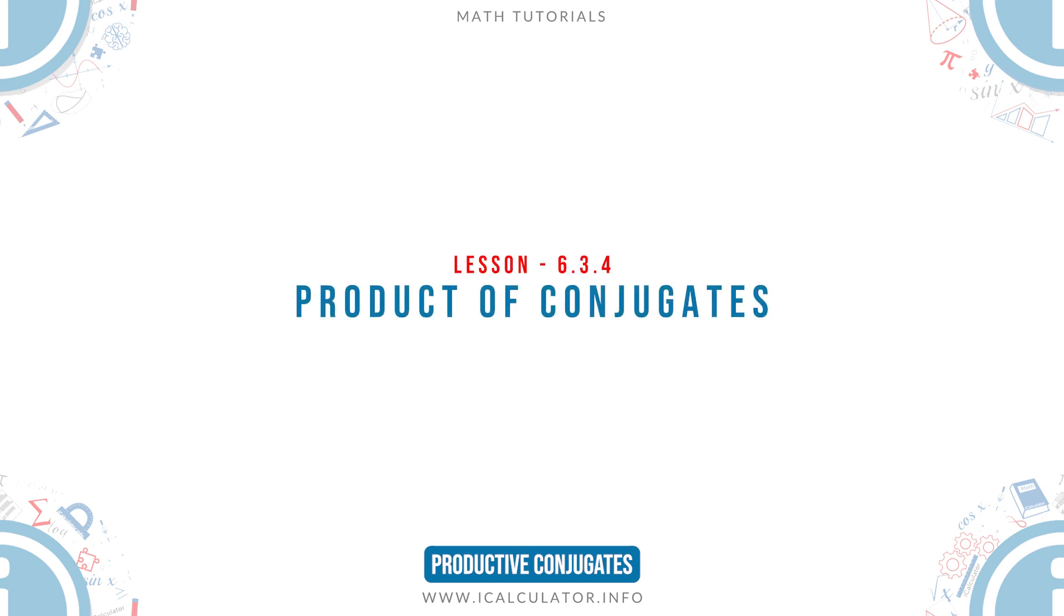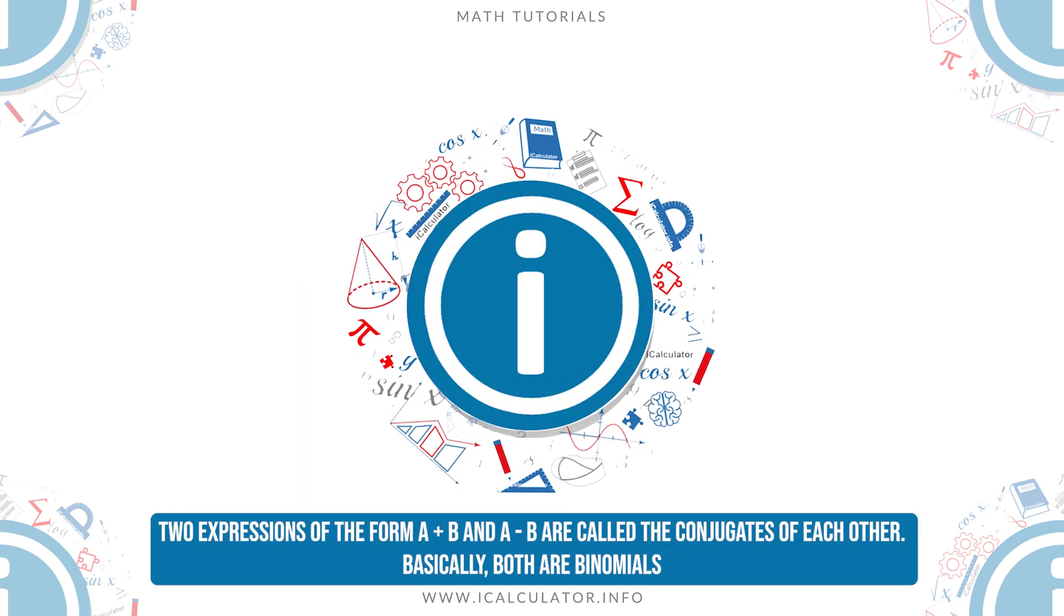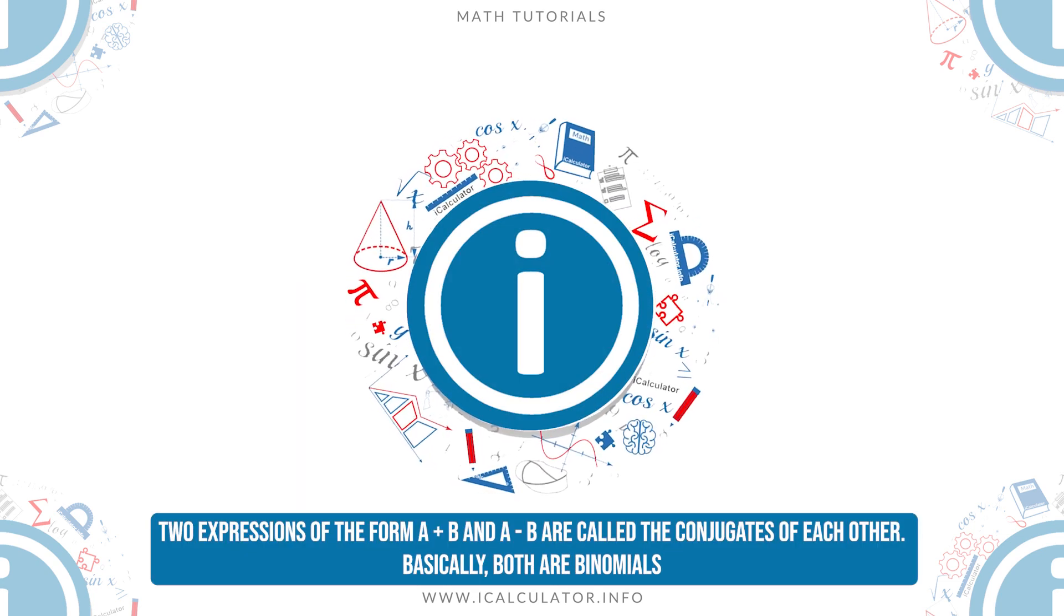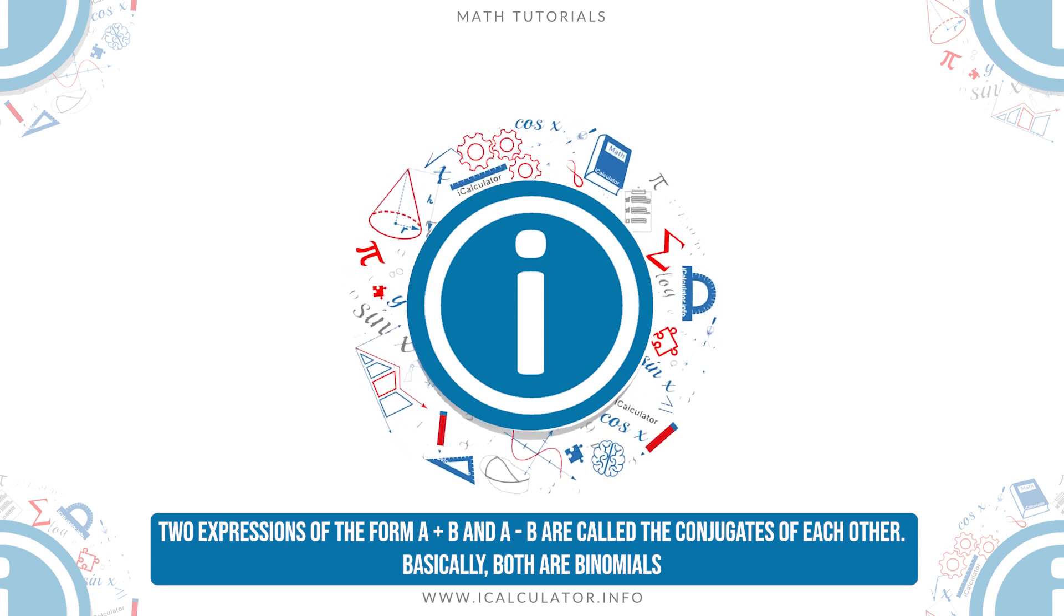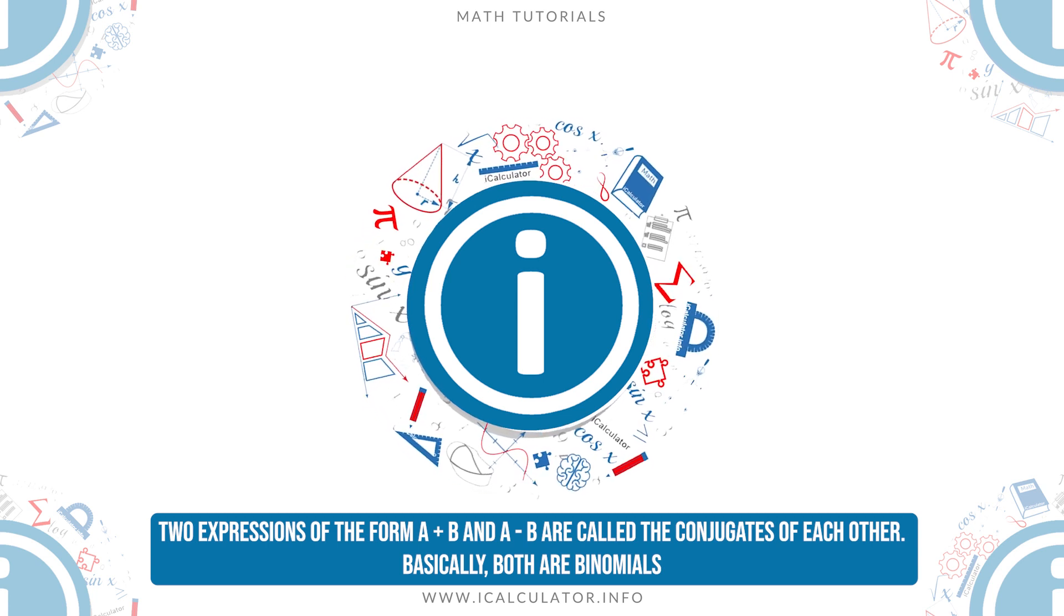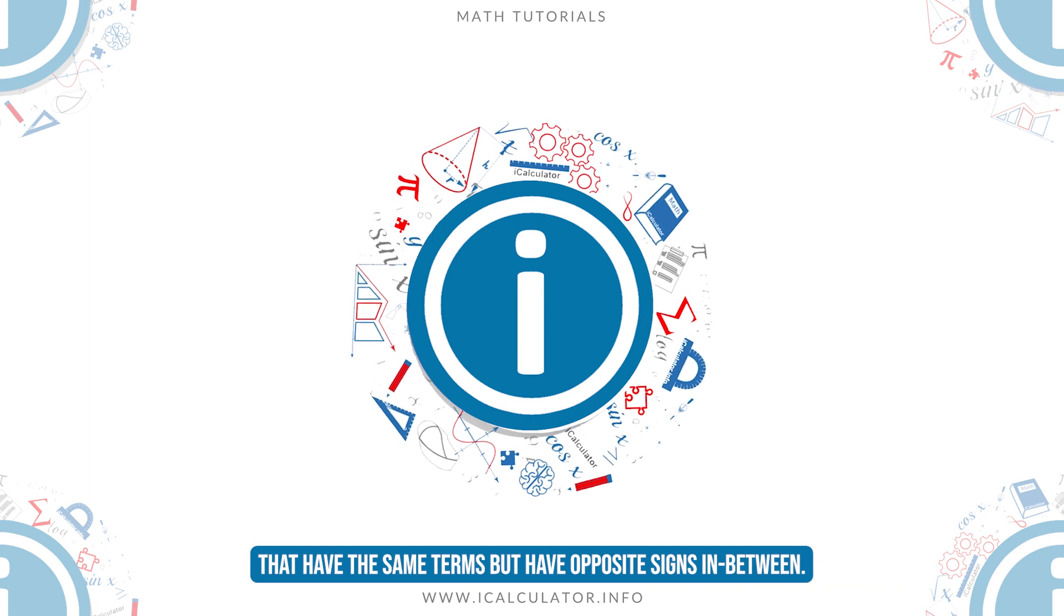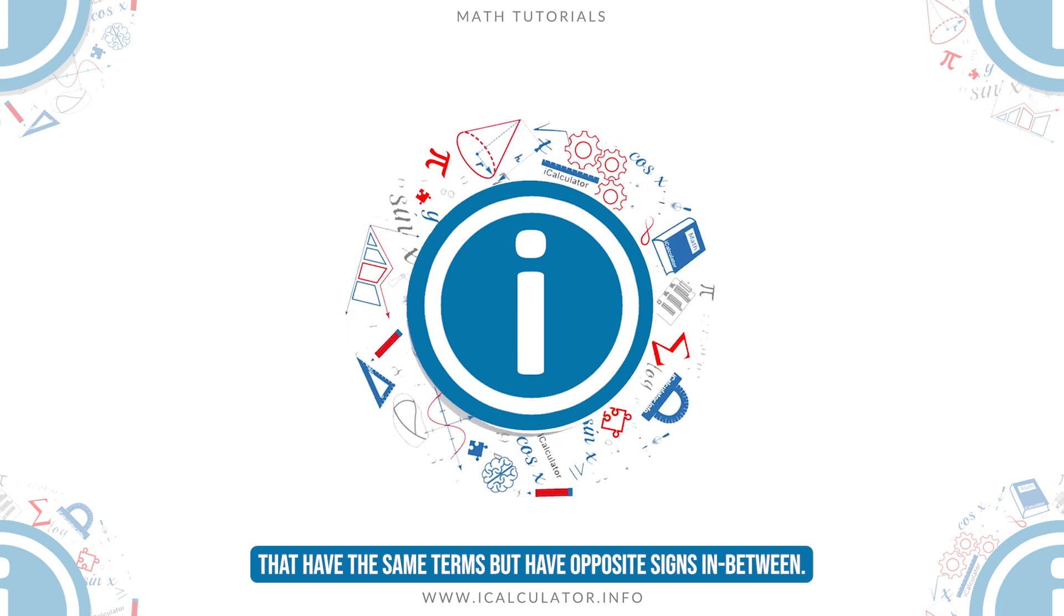Product of conjugates. Two expressions of the form a plus b and a minus b are called the conjugates of each other. Basically, both are binomials that have the same terms but have opposite signs in between.